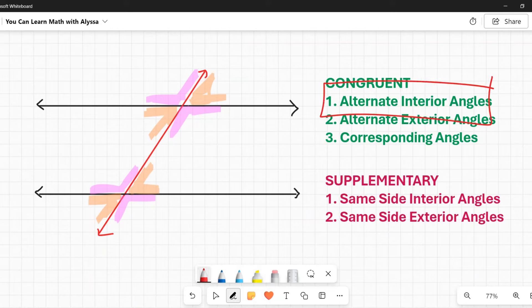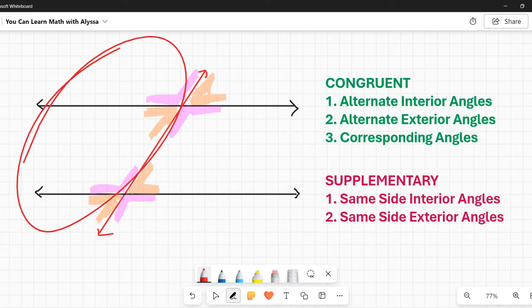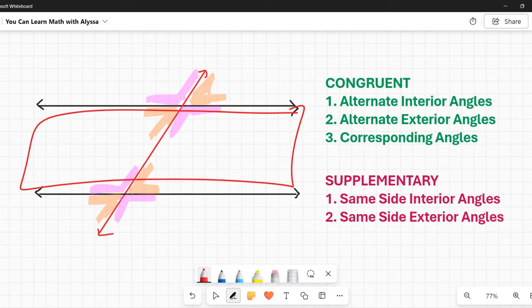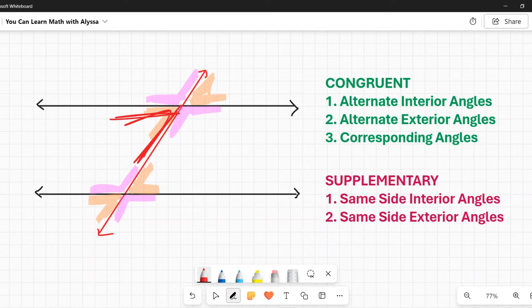So first one, alternate interior angles. Again, alternate is talking about the transversal and one's going to be on that side and one's going to be on this side. Interior refers to the spot that's fenced in. So the alternate interior angles would either be this one and this one. I'm going to number them. They're often numbered and this will make this a little easier for you to see what I'm talking about. Okay, so the alternate interior angles here would be 3 and 6 or 4 and 5. Those would be the alternate interior.